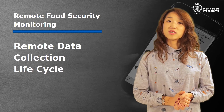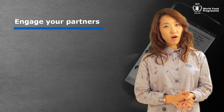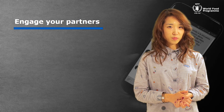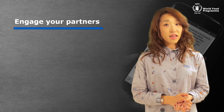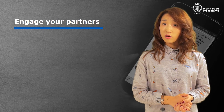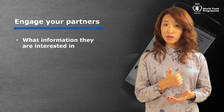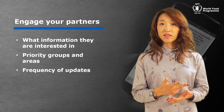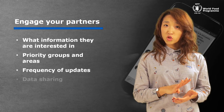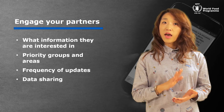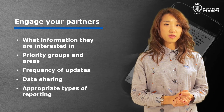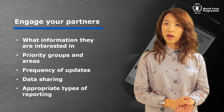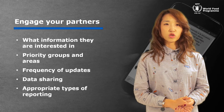The first thing you need to do is engage your partners. The partners are the people who are going to use the information that our survey will produce. We engage with them to ensure that we design the survey around their needs by finding out: first, the issues that they're interested in; second, their priority groups and areas; third, how frequently they need updates; fourth, how the data will be shared once it has been collected; and finally, what types of reporting are most appropriate. The answers that your partners provide to these questions help you design the survey and deliver a product that ultimately meets operational needs.